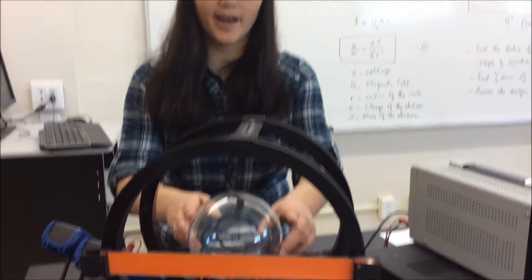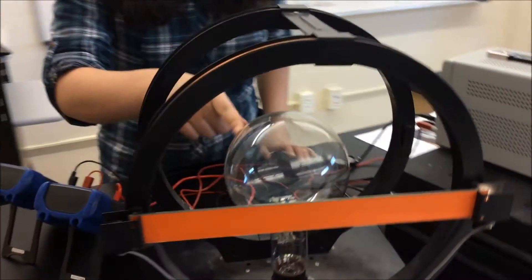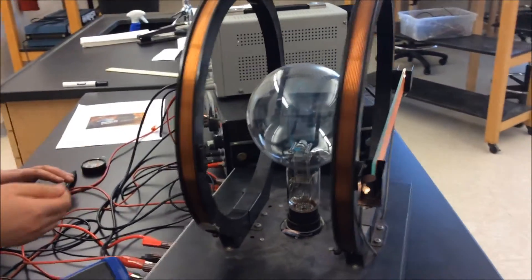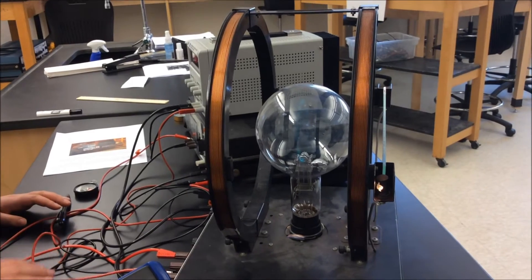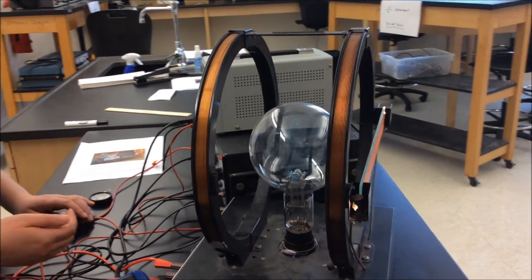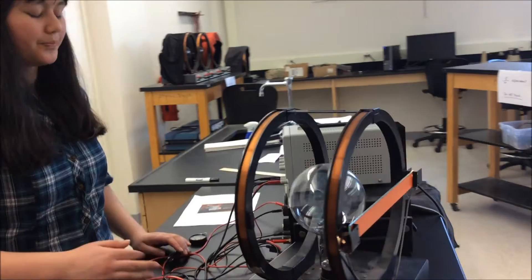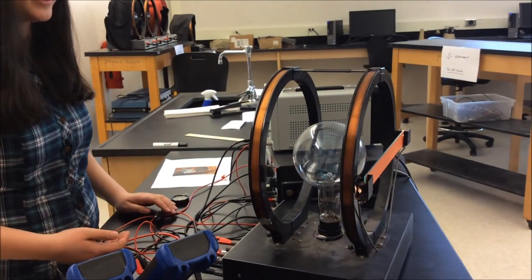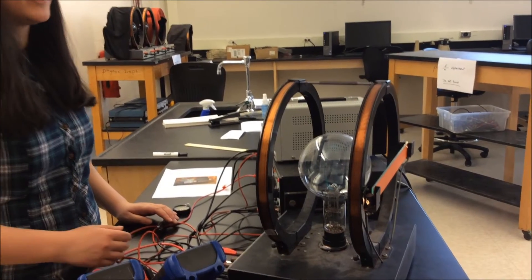Here we have what is called a cathode ray tube. In this tube, there is a cathode that electrons get emitted from, and there is argon gas. When the electrons are emitted from the cathode, this excites the argon gas. When the argon gas gets excited, it emits a blue light, and we can use this blue light to trace the path of the electrons.